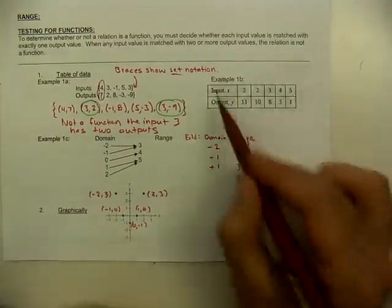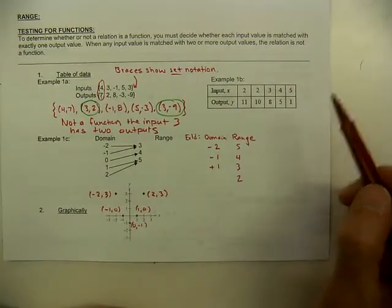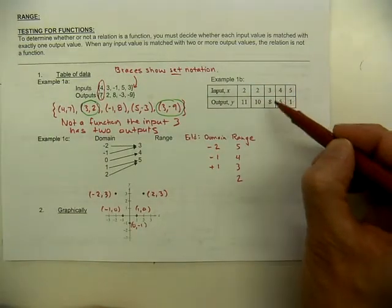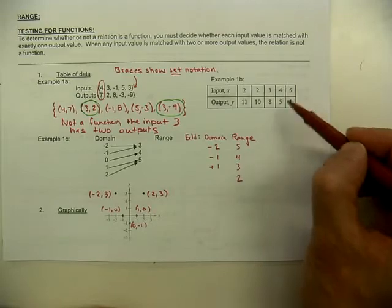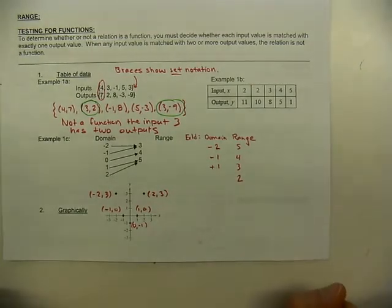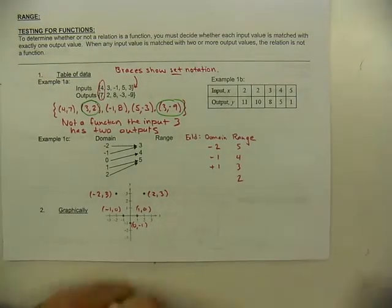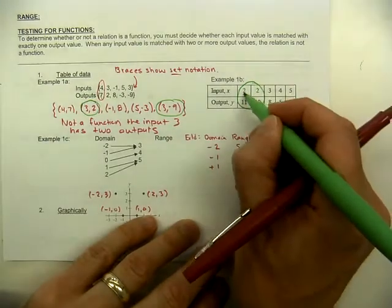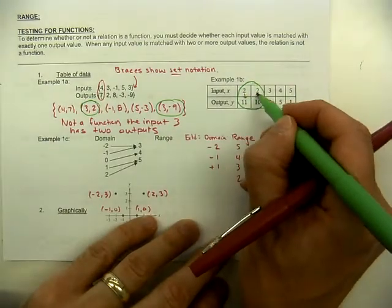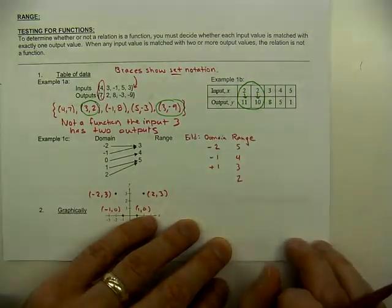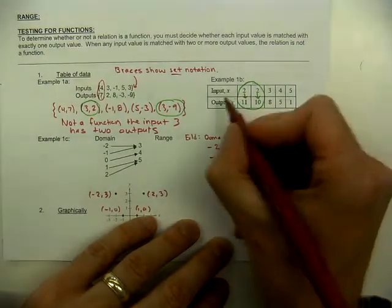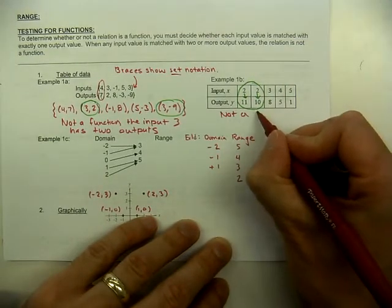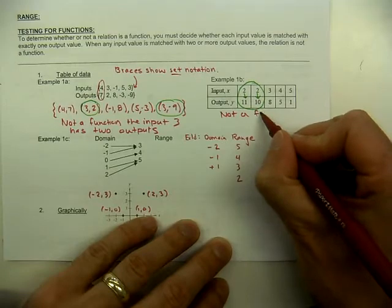In example B, we have another table with inputs and outputs: (2,11), (2,10), (3,8), (4,5), (5,1). Is this a function? No, this is not a function for the same reason we saw earlier. I'm plugging in 2 but I'm getting two different outputs — 11 and 10. We only want one output. So this is not a function.